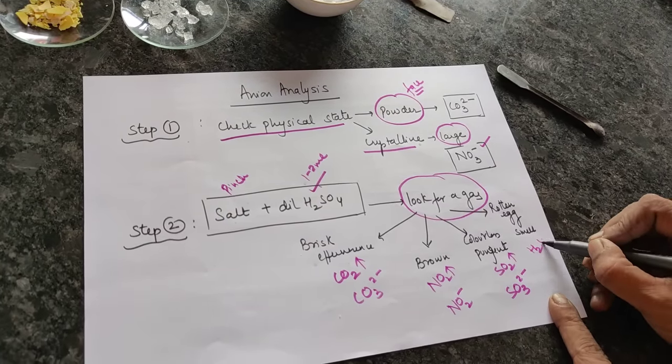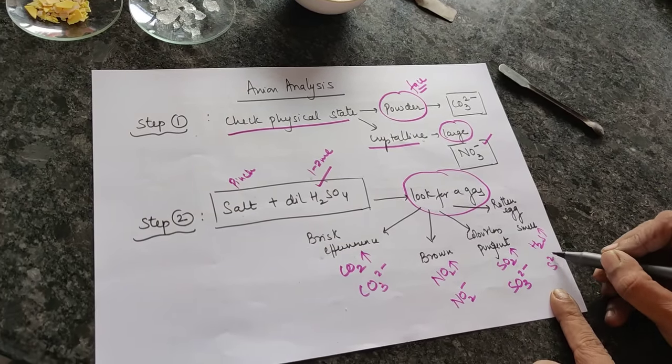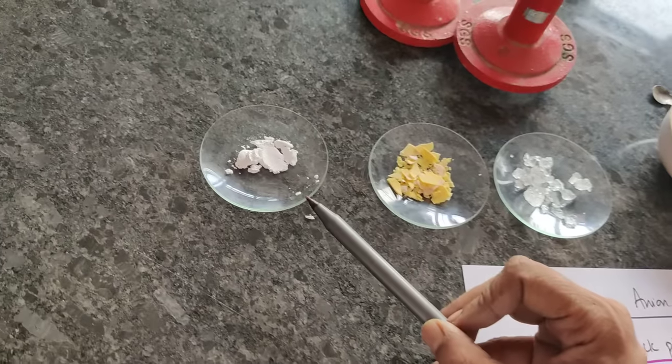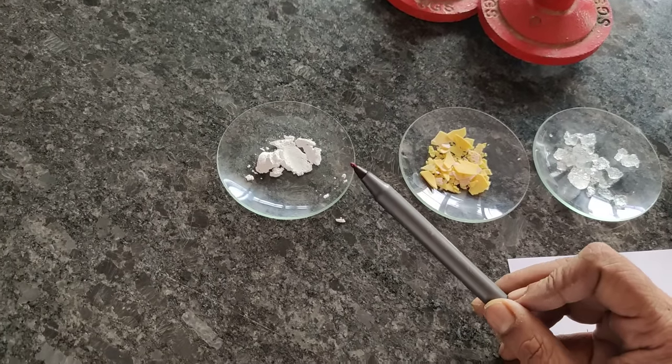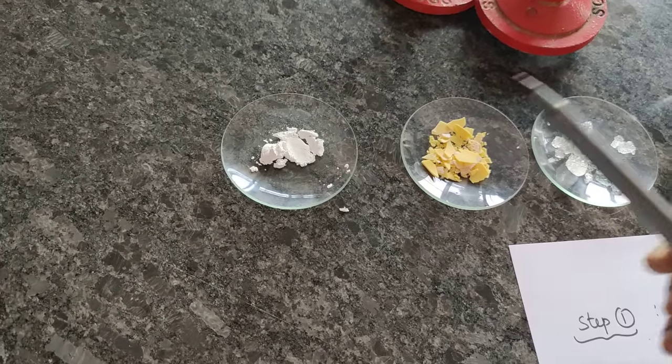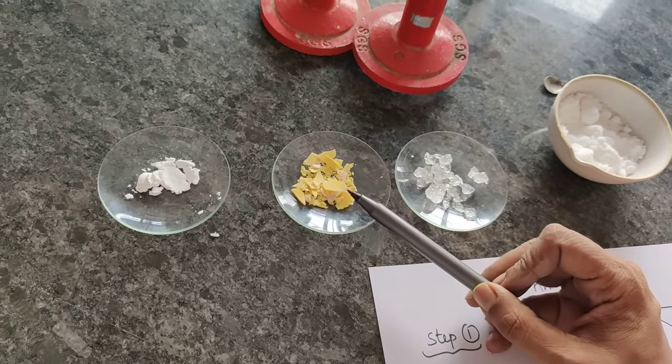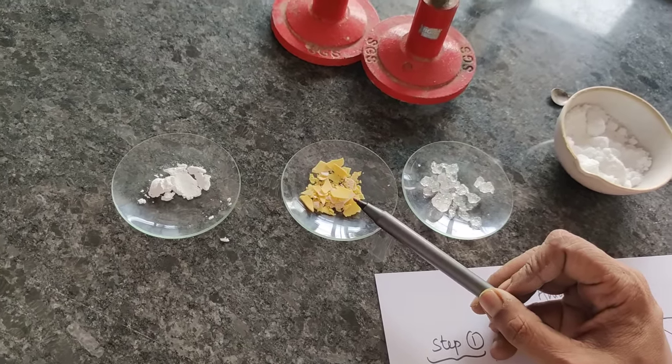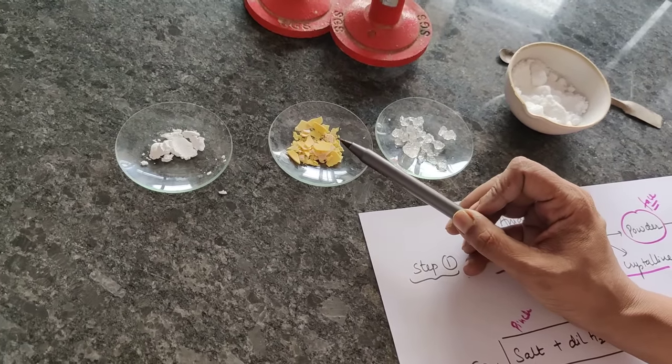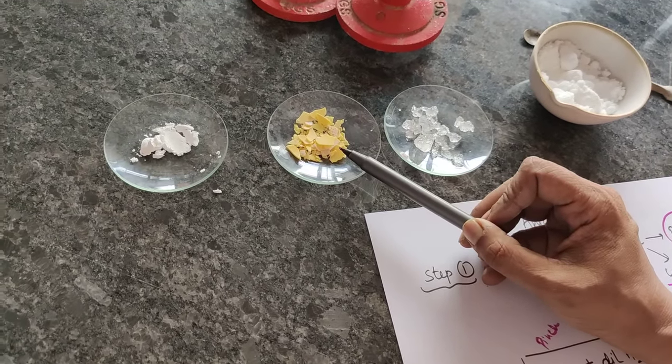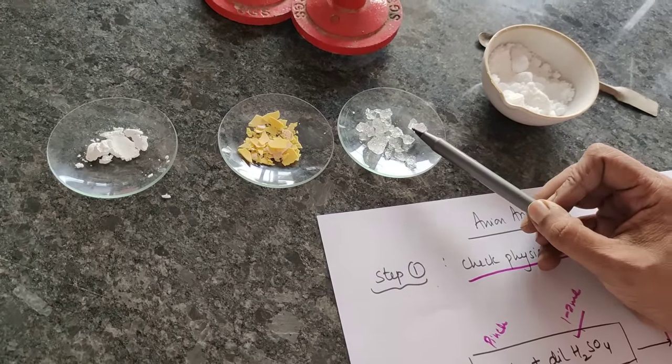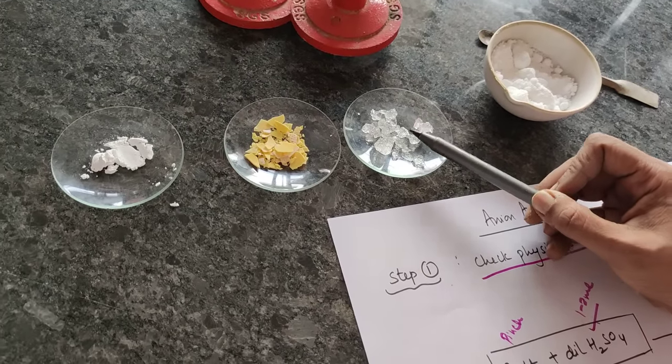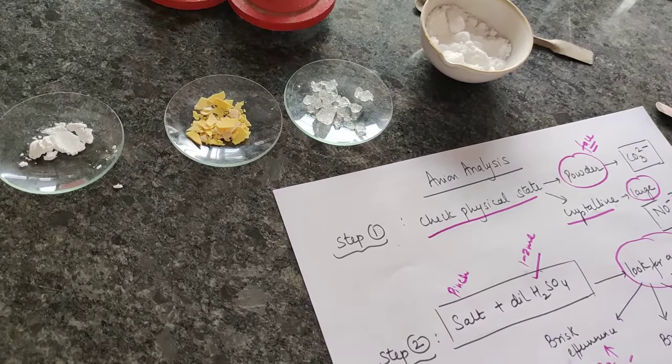If brown color gas is released, the gas is NO2 but the anion is nitrite. If colorless pungent gas comes, the gas is SO2 but the anion is sulfite. If rotten egg smell comes, the gas is H2S and the anion is sulfide. If I'm talking about this salt, the gas would be Eno-like bubbles for carbonate. This is nitrate, not nitrite, so we won't get any gas in this particular one.